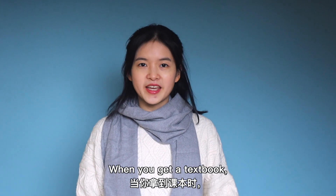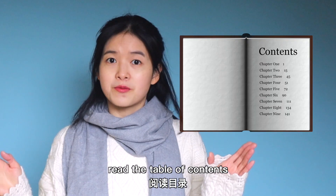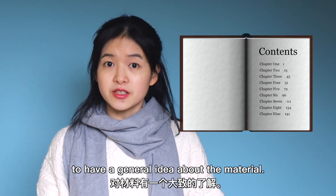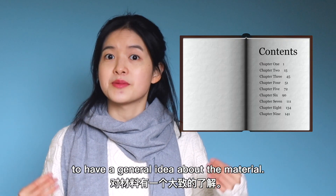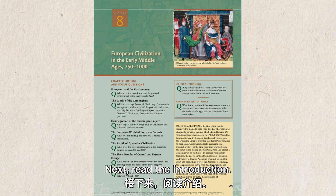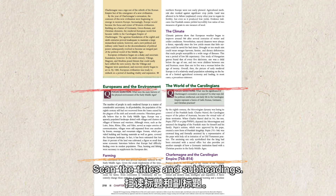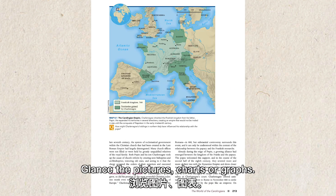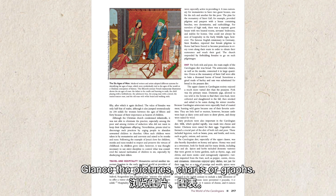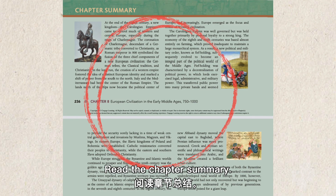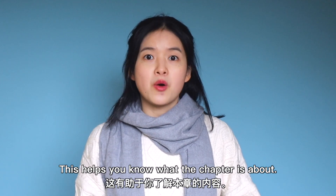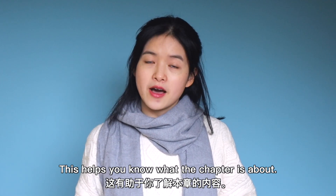Step 1: Preview. When you get a textbook, read the table of contents to have a general idea about the material. Next, read the introduction. Scan the titles and subheadings, glance at the pictures, charts, or graphs, and read the chapter's summary. This helps you know what the chapter is about.